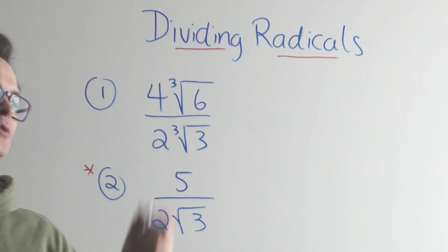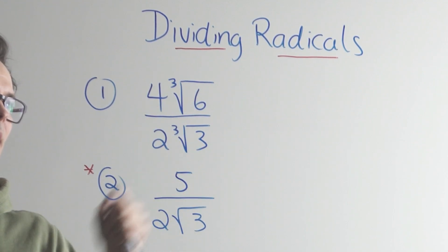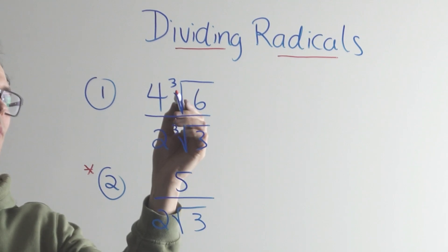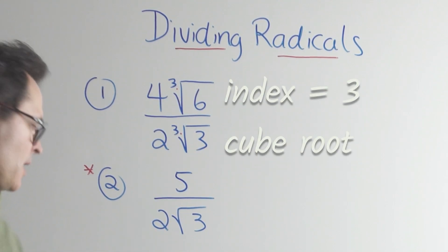But the first one here is probably the easiest form of division. When you have a radical divided by a radical, you can see we want to make sure that the index numbers, the indices are the same, and they look pretty good here. They're both three cube roots.